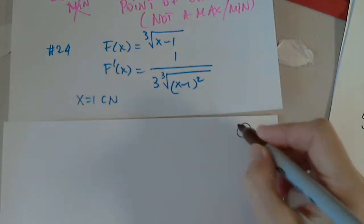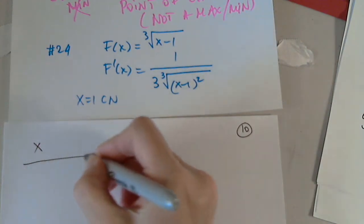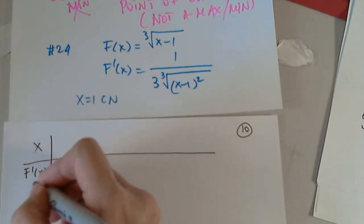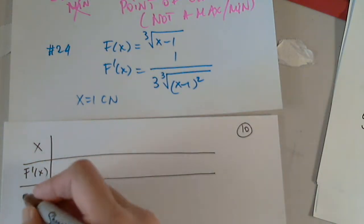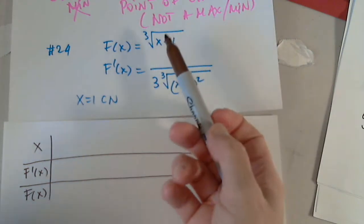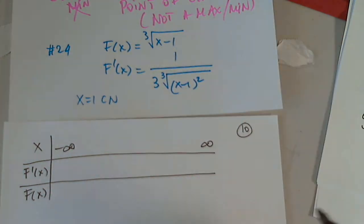We're on 24 now. So x, f prime, f of x. I analyze, we already talked about it, domain all real numbers again, it's the cube root.